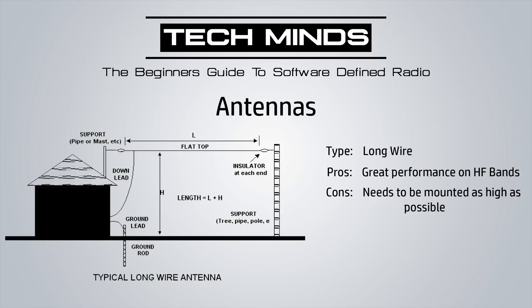This type is called a long wire. It has great performance on HF bands, but the downside is you need to mount it as high as possible, so you'll probably need a friend to help. You can buy these already made on eBay — you'll get a long piece of wire with a balun already made and just attach your cable — or you can make one yourself. It's very easy, and there are loads of instructional videos and documents online on how to calculate the lengths for resonant antennas.